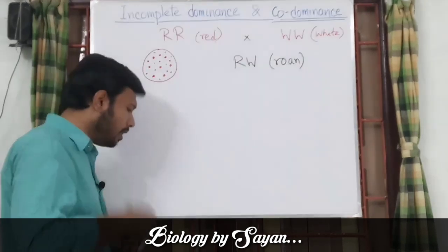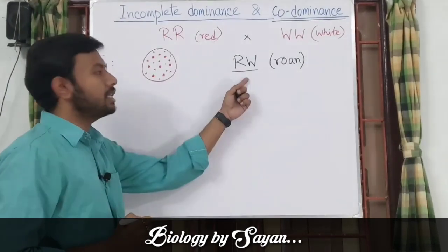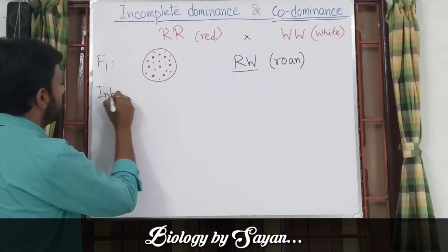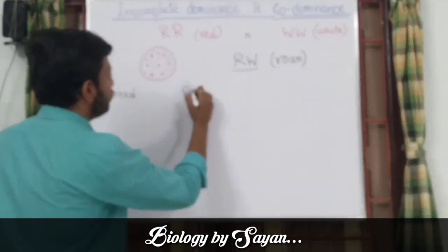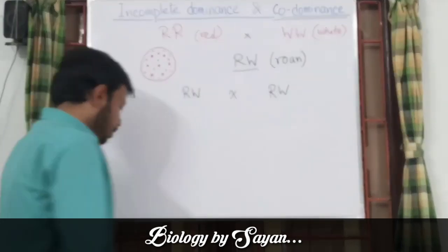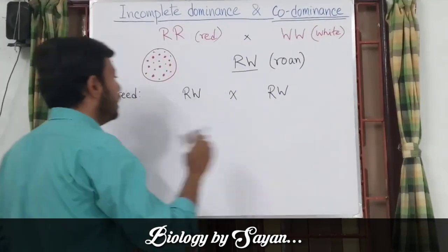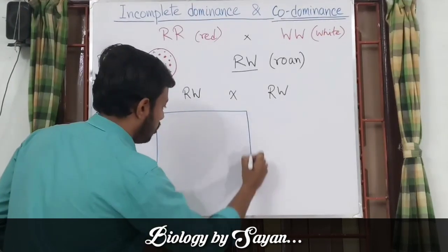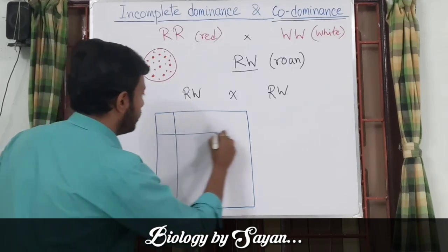Now let's find out what will happen if we inbreed two such F1 hybrid roan organisms. We will trace this cross in the F2 generation with the help of a Punnett square. Here is our Punnett square.